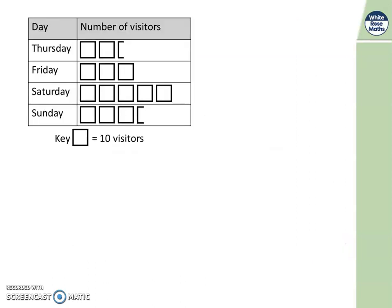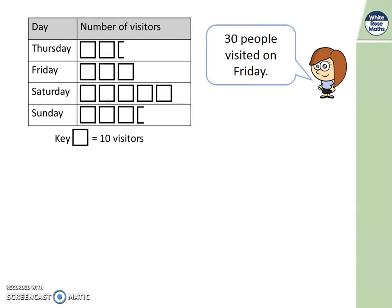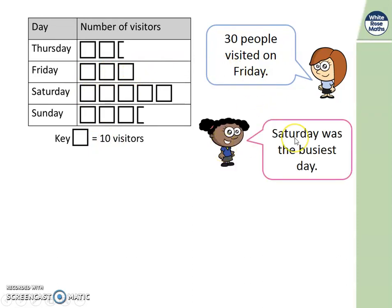Let's have a look at what these children found out from the pictogram. This girl says 30 people visited on Friday - is she correct? Here's Friday, and each square is worth 10: 10, 20, 30. Yes, she's correct. This girl says Saturday was the busiest day - do you agree? Yes, because Saturday has the most squares, so it was the busiest day at the museum.